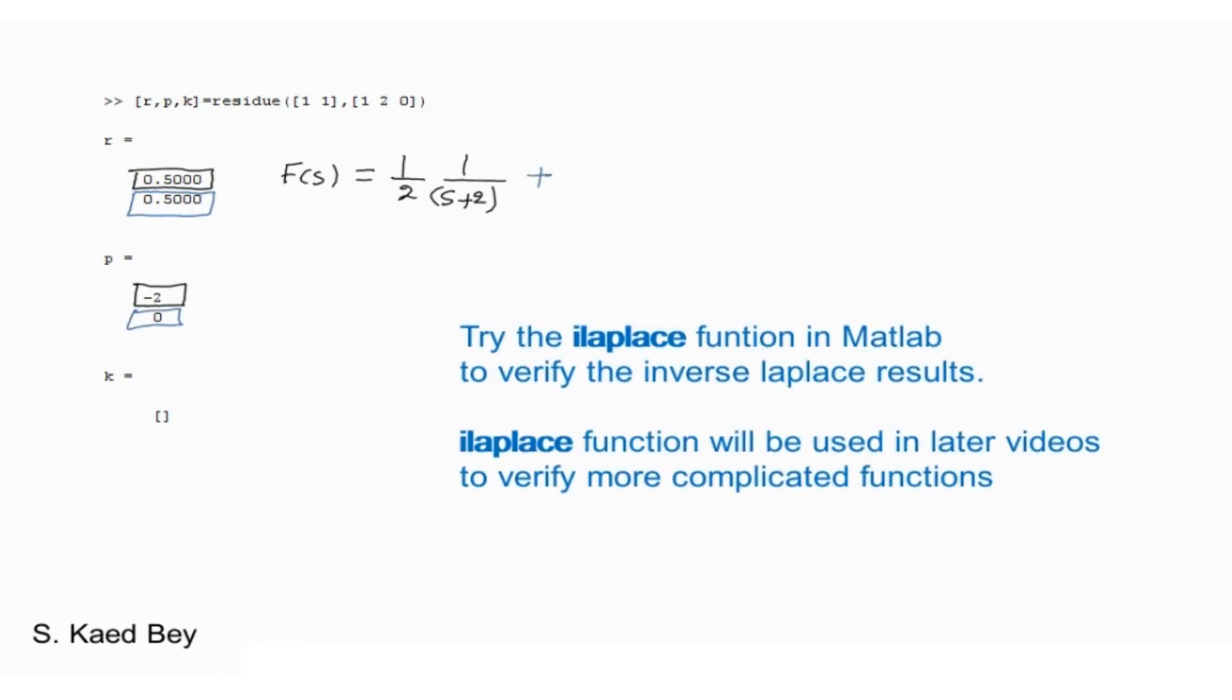Please note that the first value in the residue vector r corresponds to the first value in the pole vector p. So in this case 0.5 corresponds to the first pole of minus 2. The second value in the r vector corresponds to the second value in the pole vector.